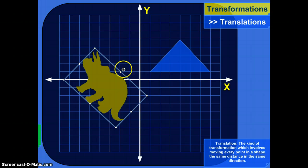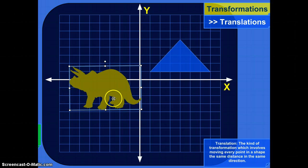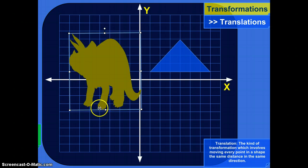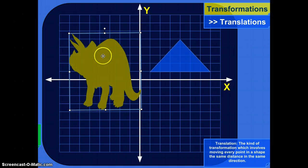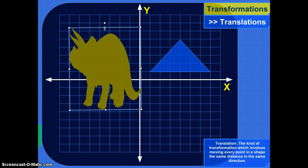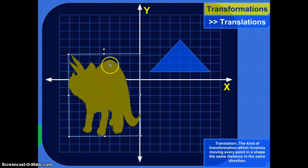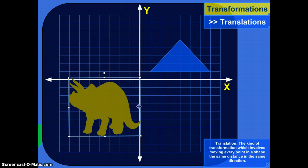So it's not stretching it like that. It's not rotating it like that. This right here was a rotation. This right here is not a translation because some points stay while others move a ton. Every point has to move the same distance in the same direction.